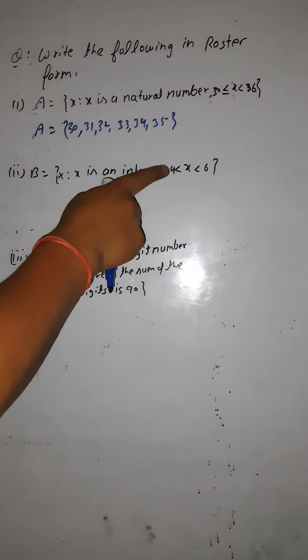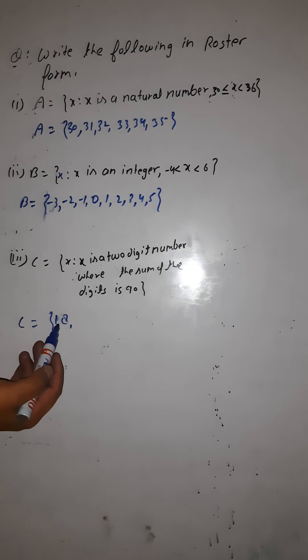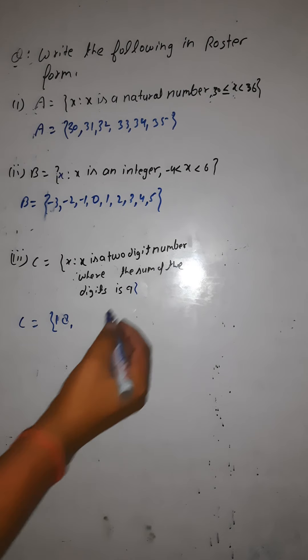Question C: set C contains the element X such that X is a two-digit number where the sum of the digits is 9. Can it be 10? No, because 1 plus 0 is 1. Can it be 11? No, because 1 plus 1 is 2. But 18 works because 1 plus 8 equals 9. So the first element is 18.